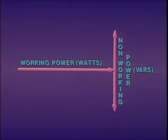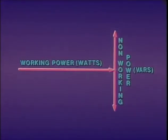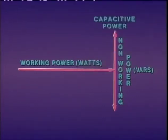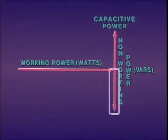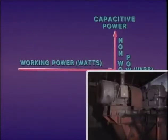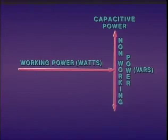Non-working power may include two different and opposing conditions. One condition is represented by the upper half of the vertical line — non-working power that is a result of charging current, such as the charging current required to energize long, high-voltage transmission lines. This kind of non-working power is referred to as capacitive power. The lower half of the vertical line represents the direct opposite: non-working power that is a result of magnetizing current, such as the magnetizing current required by induction motors. This kind of non-working power is referred to as inductive power.